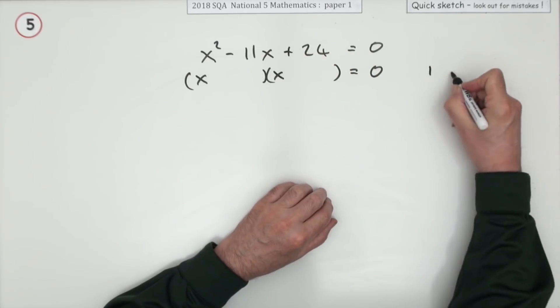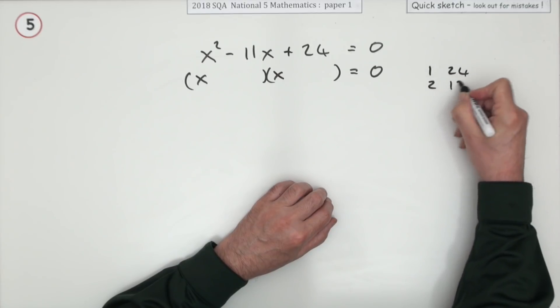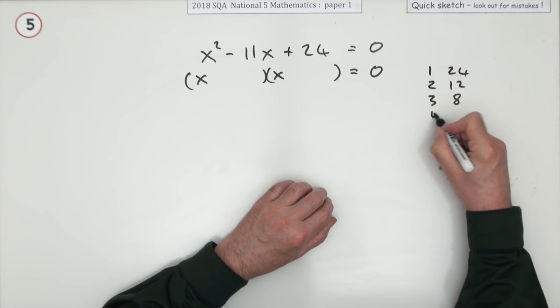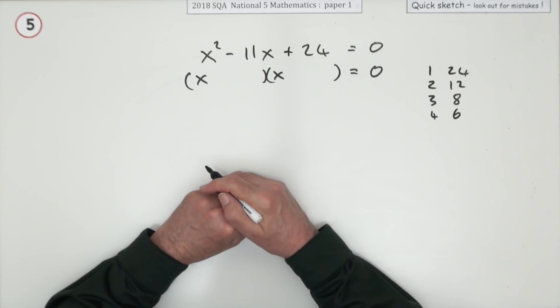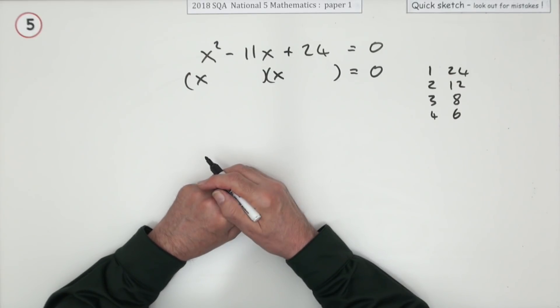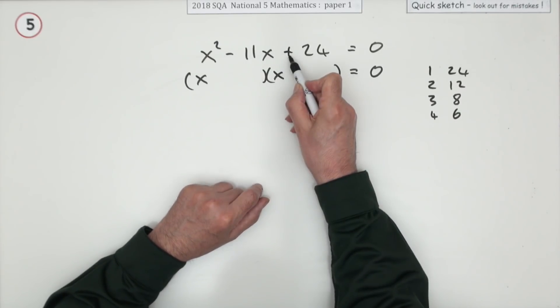Well, the last times the last makes the 24. There's quite a few choices: one times 24, two times 12, three times eight, four times six. Running out of space, there's only a five left in between, so that's them all. The rest are just repeats going back up the other side.